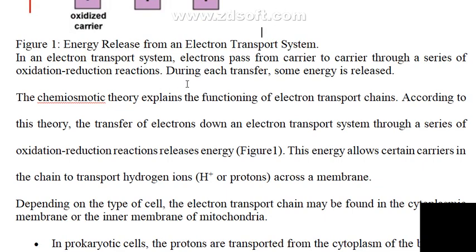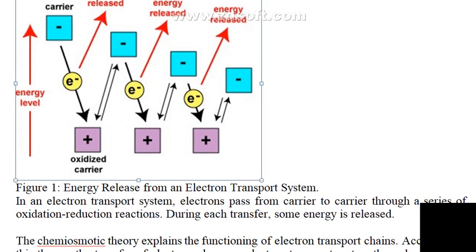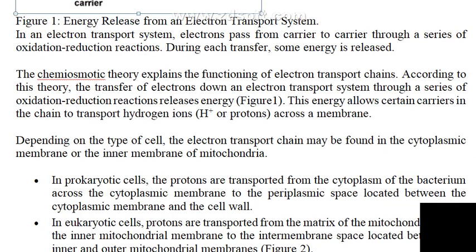The chemiosmotic theory explains how the electron transport chain functions. According to this theory, the transfer of electrons down the electron transport chain through a series of oxidation-reduction reactions releases energy. This energy allows certain carriers in the chain to transfer protons across the membrane — from inside the mitochondrial matrix to the intermembrane space, or from the bacterial cytoplasm to outside the cytoplasmic membrane.